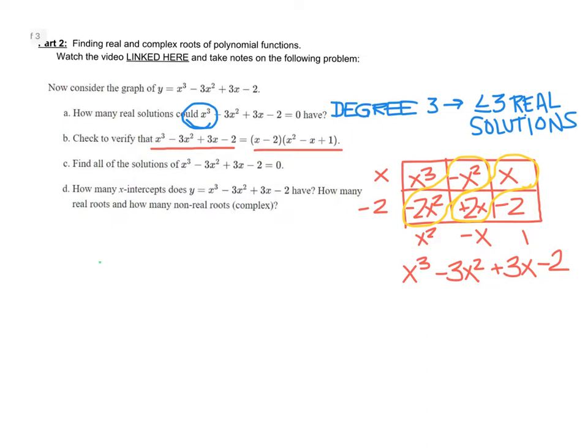So C asks us to find all of the solutions for this. And so we have x cubed minus 3x squared plus 3x minus 2 equals 0. We know we can write it in the form x minus 2 times x squared minus x plus 1 equals 0.